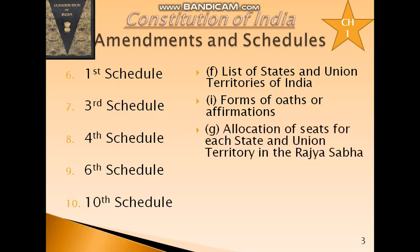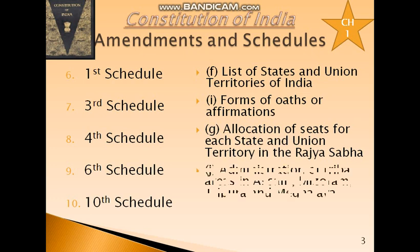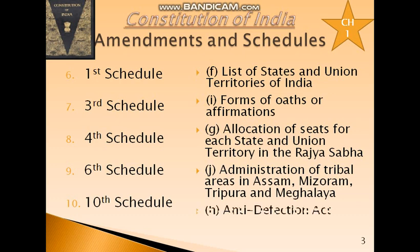The 4th Schedule explains the allocation of seats for each state and union territory in the Rajya Sabha. The 6th Schedule covers the administration of tribal areas in Assam, Mizoram, Tripura, and Meghalaya. The 10th Schedule is about the Anti-Defection Act.